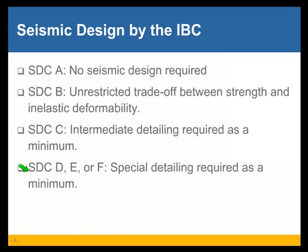The very important thing to understand is that unrestricted trade-off between strength and inelastic deformability is allowed only in the low seismic design category — Seismic Design Category B. Seismic Design Category combines three things: the seismic hazard at the site of the structure, the occupancy of the structure — whether it is an office building or an apartment — and the soils at the site of the structure, very importantly.